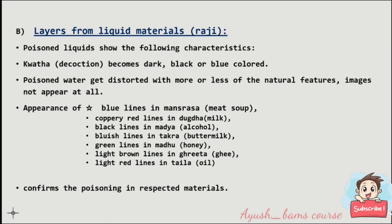For poisoned liquids: a poisoned decoction (quatha) becomes dark black or blue. Poisoned water gets distorted and natural feature images do not appear at all. Appearance of blue lines in meat soup, coppery-red lines in milk, black lines in alcohol, bluish lines in buttermilk, green lines in honey, light brown lines in ghee, and light red lines in oil — these confirm poisoning in the respective materials.